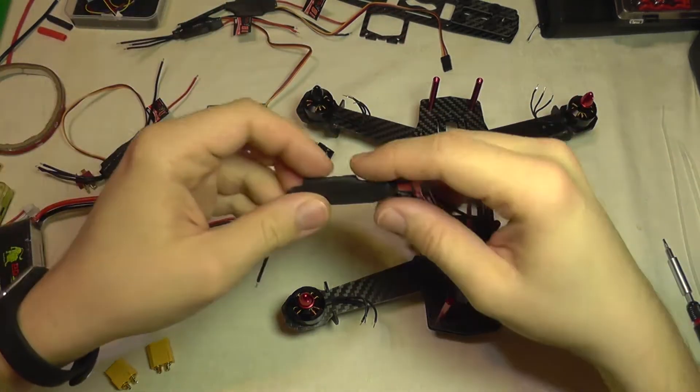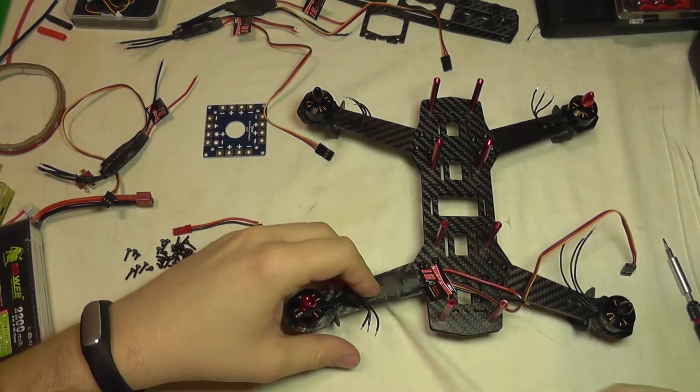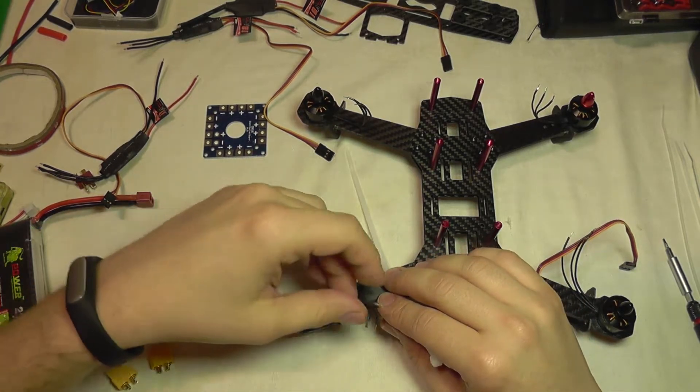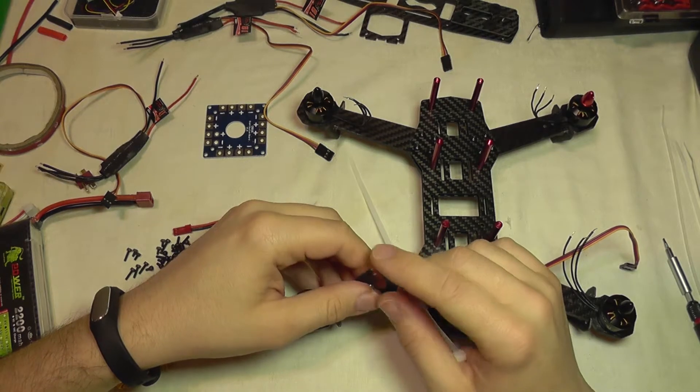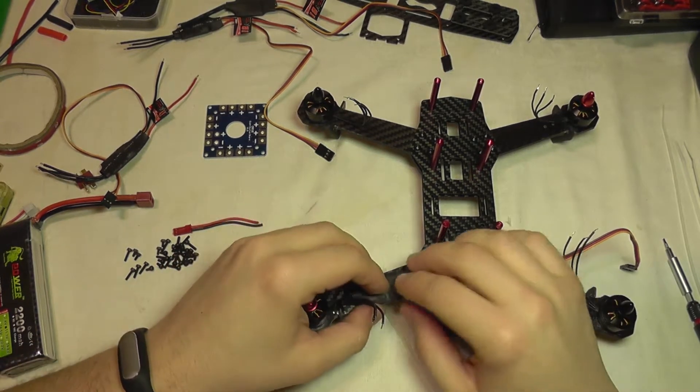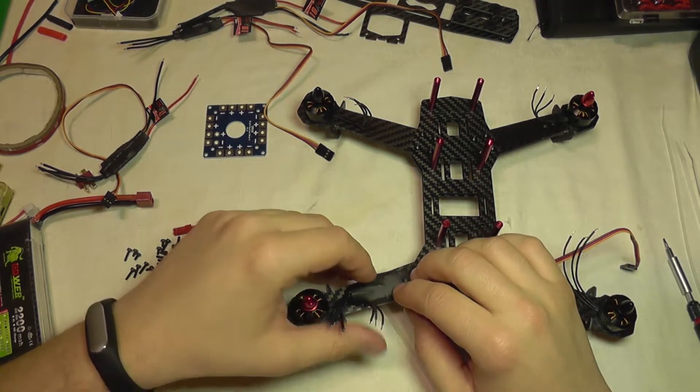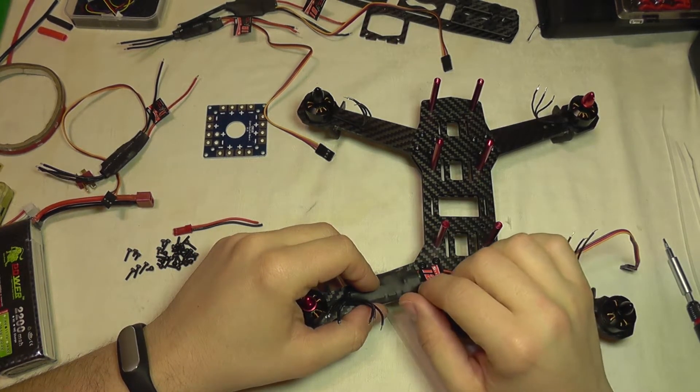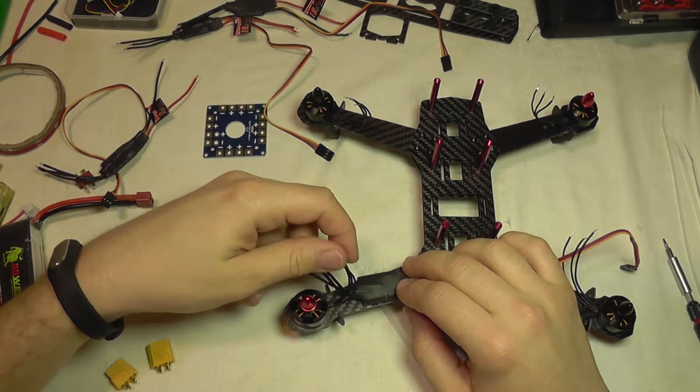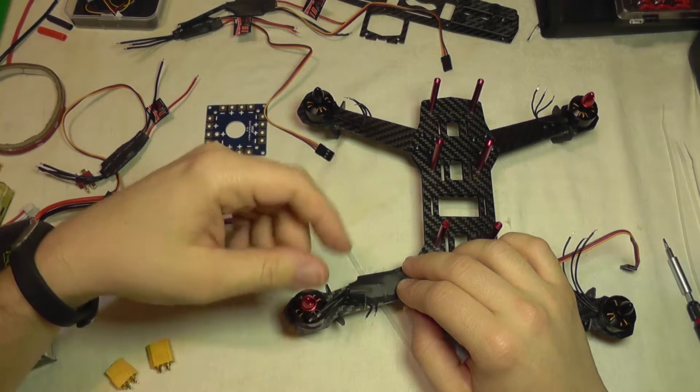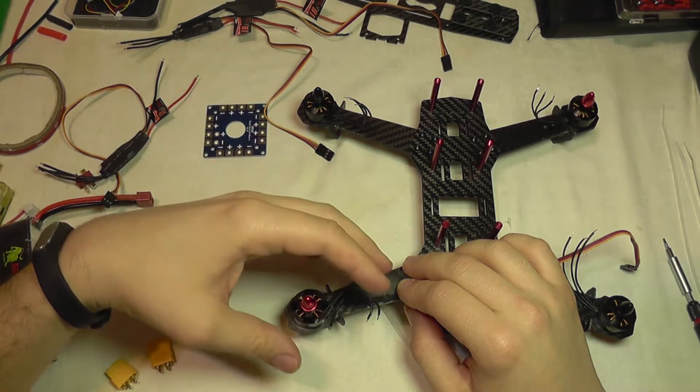For the installation of the ESCs, I'm going to use zip ties to hold them in place, and temporarily I'm going to solder the wires and use some duct tape to insulate them until I configure each motor from the controller to know each spinning sense. And if I need to reverse them, I'm going to unsolder them and swap two wires.